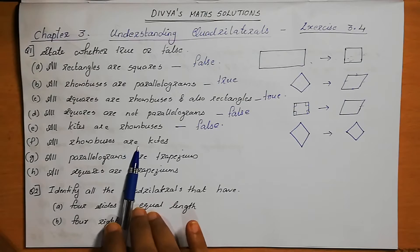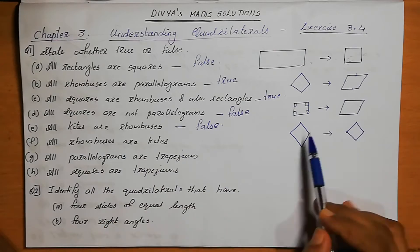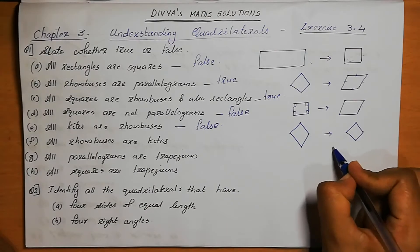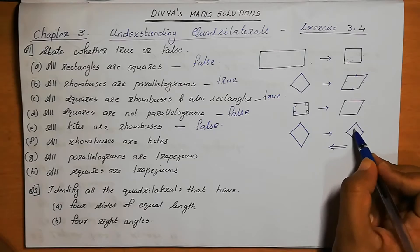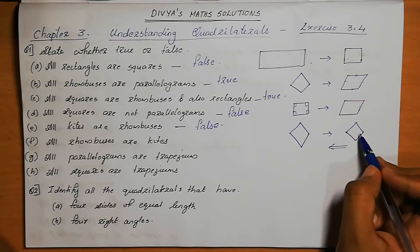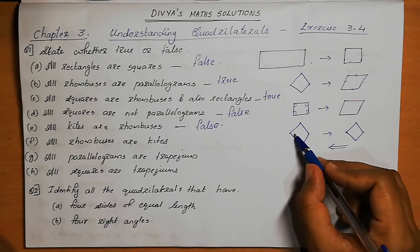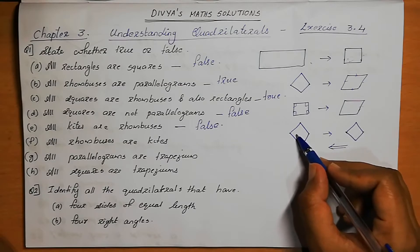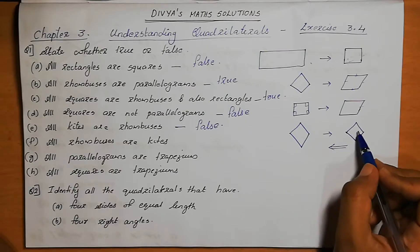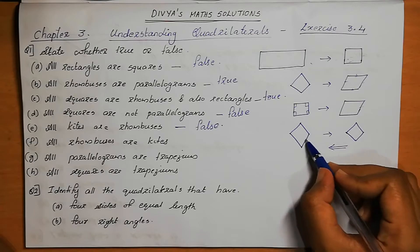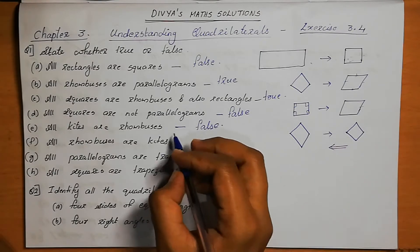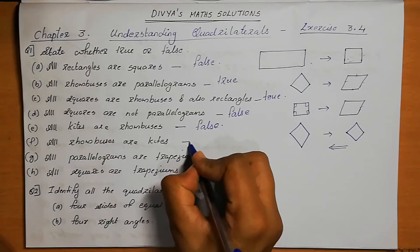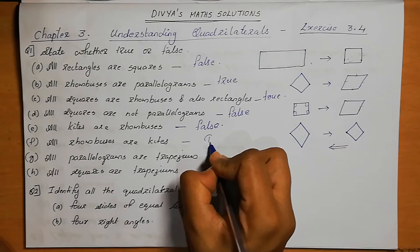F: All rhombuses are kites — the reverse. In a rhombus, all sides are equal, so opposite sides are equal. These two sides are equal and those two sides are equal, so all rhombuses are kites is possible. This is a true statement.